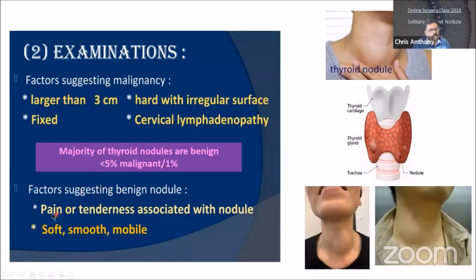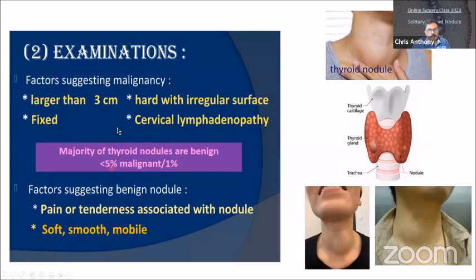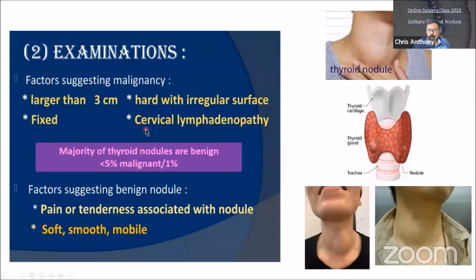A benign nodule, if there is pain or tenderness associated with it — meaning you press and the patient is in pain — is unlikely to be malignancy; usually it's an inflammatory nodule. It is usually smooth, soft, and mobile. You can classify consistency as hard, firm, and soft. Firm and soft are normally benign; stony hard suggests cancer. Importantly, the majority of thyroid nodules are benign. Less than 5% are malignant — most studies show about 2%. We focus on this nodule because it commonly occurs in young patients, teenagers, and has very good prognosis — if you remove the nodule, the cure rate is almost 100%.